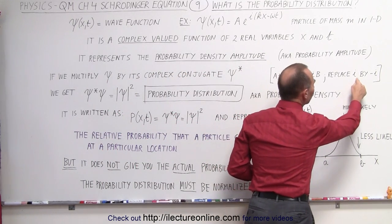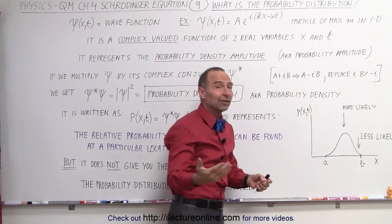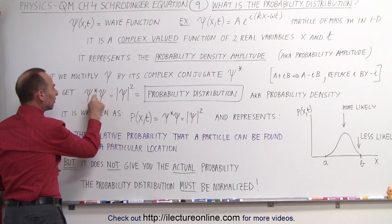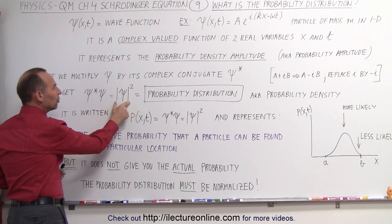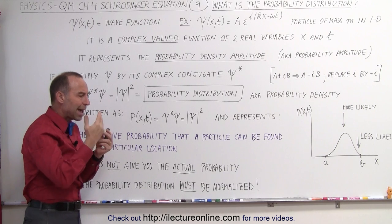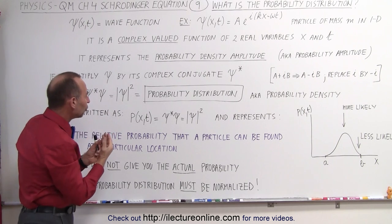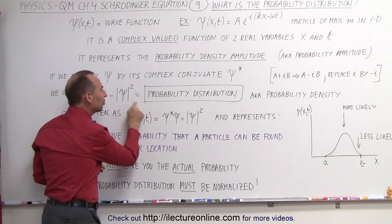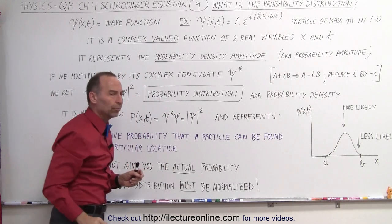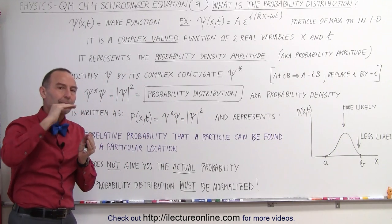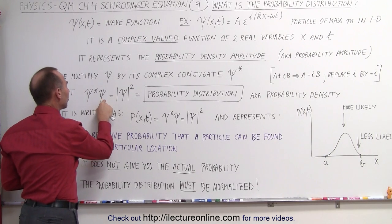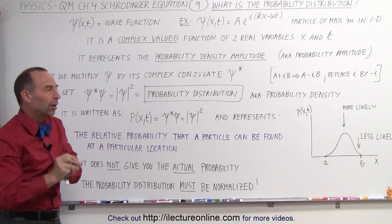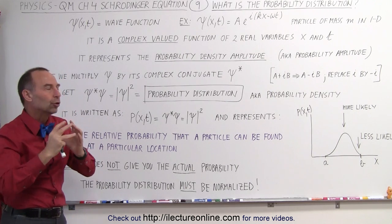In other words, you take your i and replace it by a negative i, or you take the negative i and replace it by a positive i. When you do that — when you multiply the wave function by its complex conjugate — you get the magnitude, without the complex portion of it, of that wave function squared, and that is known as the probability distribution. So now we have a closer connection to the probability of finding a particle. We've multiplied the wave function by its complex conjugate because that allows us to get rid of the imaginary part and only retain the magnitude of that number.